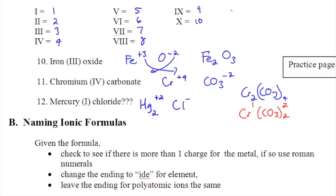So Mercury one is actually Hg2 with a plus two charge. And chloride is Cl minus. So you need two Cls to cancel off that plus two for Mercury. So it's going to be Hg2Cl2. That can't change. You're not reducing that because Hg2 is the actual element.